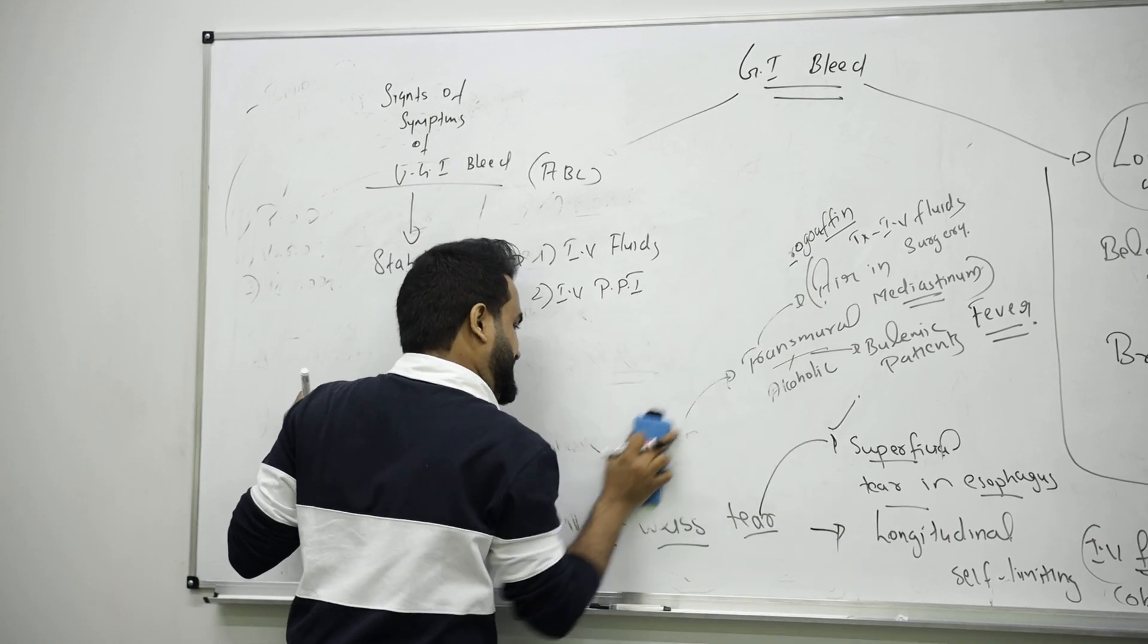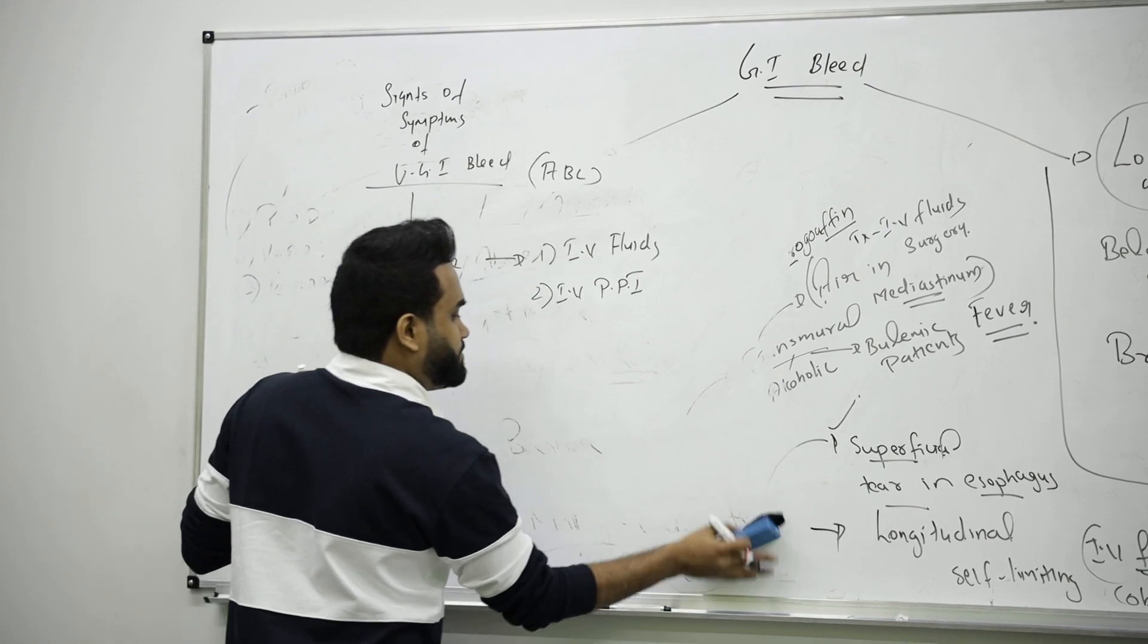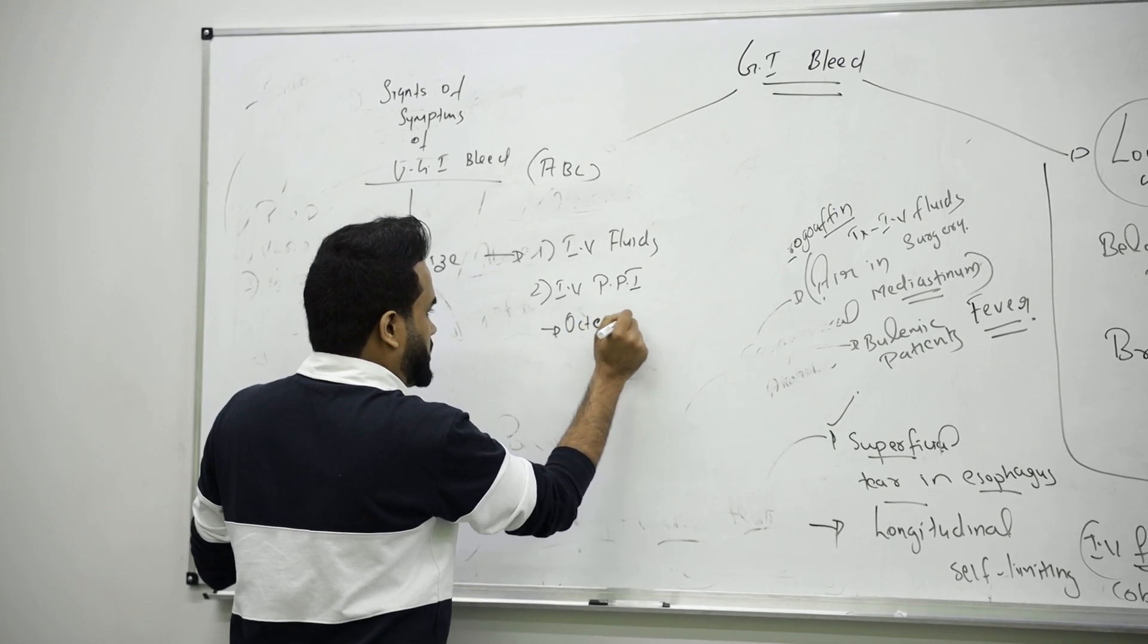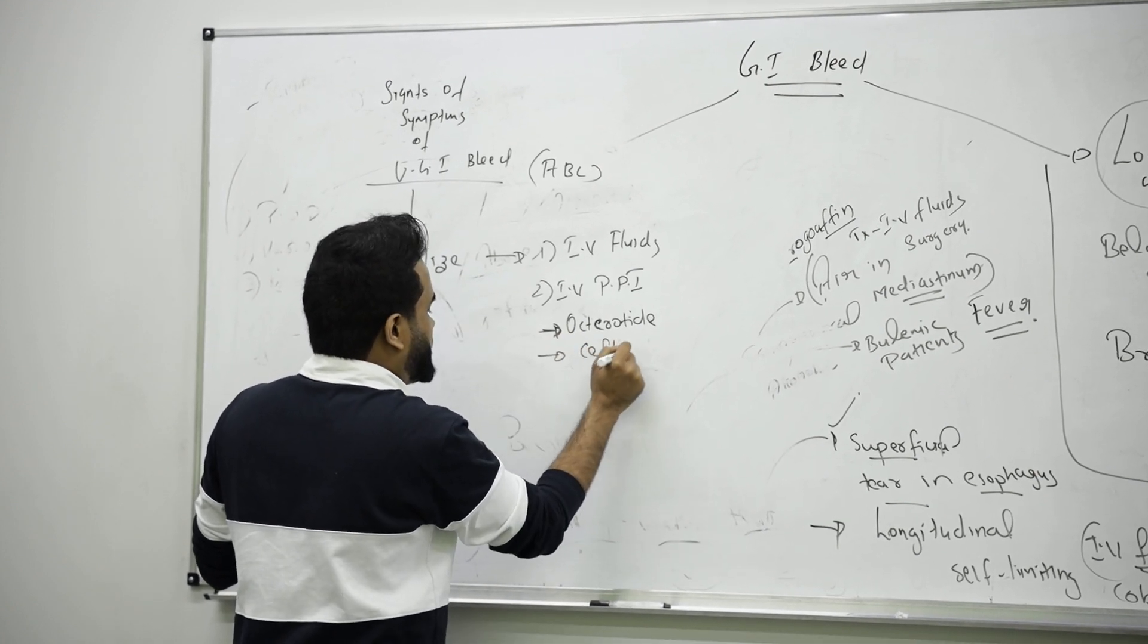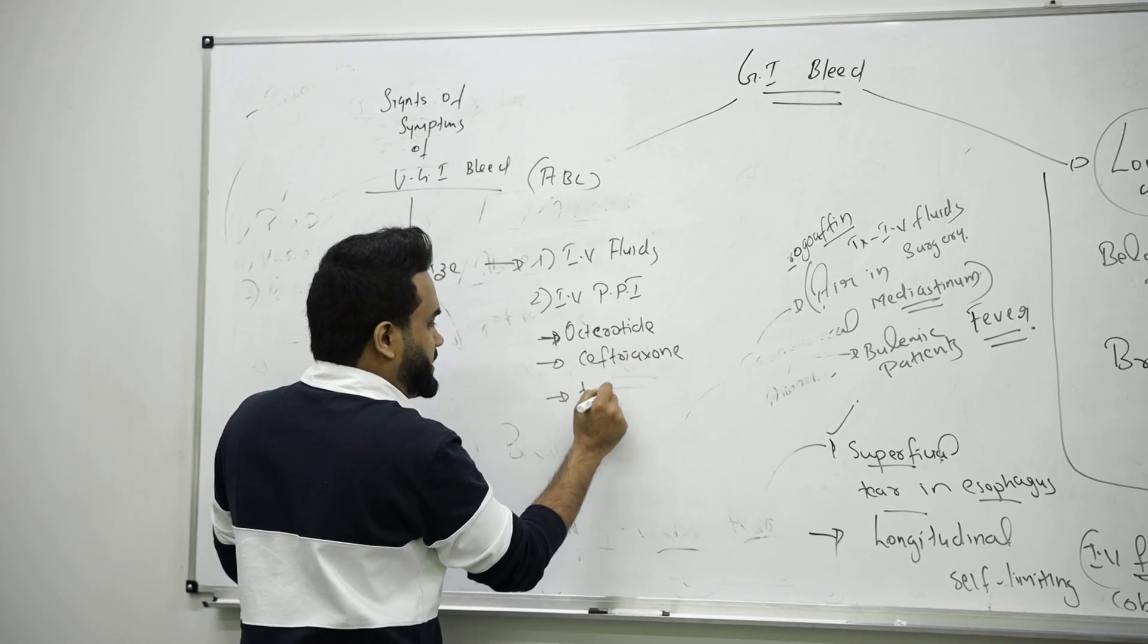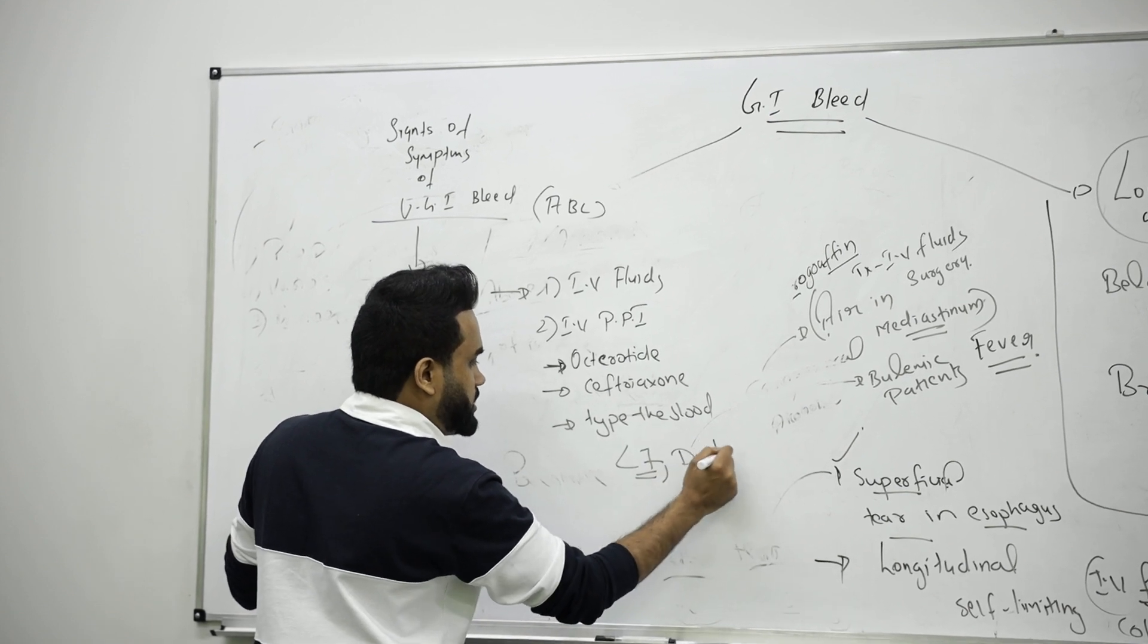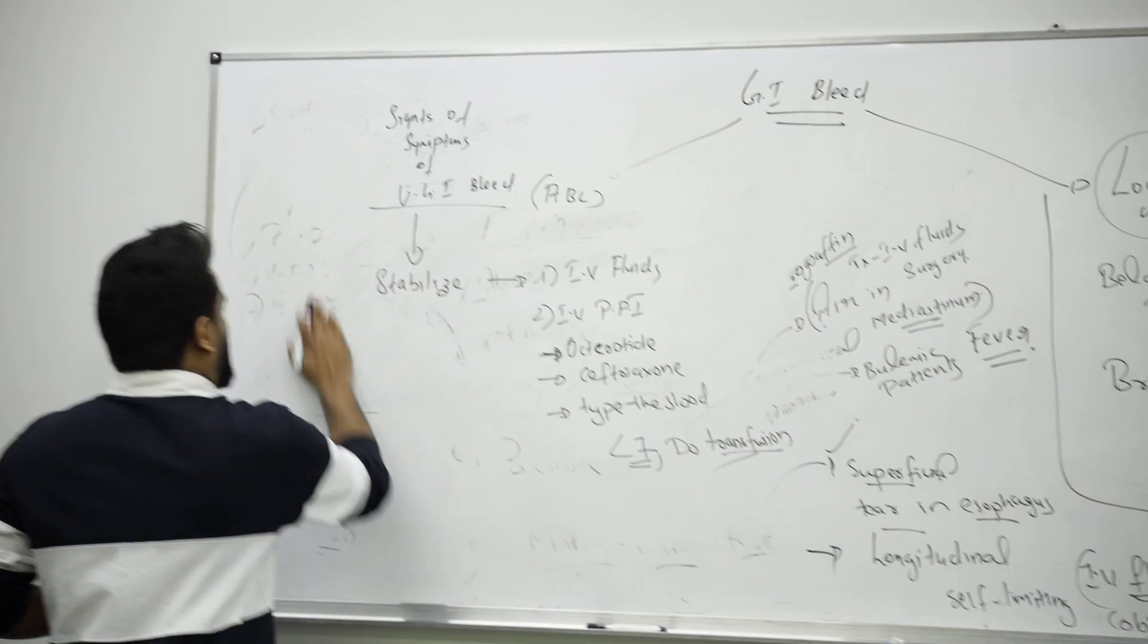You can give them bleeding-stopping drugs as we have told—octreotide. Then give an antibiotic to prevent infection—that is ceftriaxone. And remember, we should do the typing of the blood. Type the blood because in case the patient's hemoglobin goes less than seven, do transfusion. So what is the limit to do transfusion? The blood is less than seven.